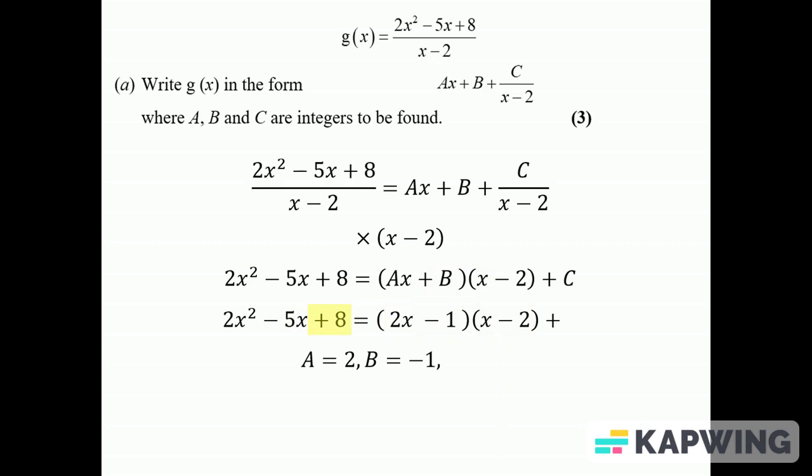And then the +8, well I need +8 on the right hand side as well. I've already got 2 from the -1 times the -2, so I need another 6, so the C is 6. There we are, there's the tried and tested just look at it method. So g(x) is that, and we're going to integrate it.